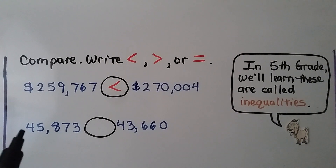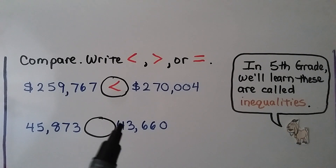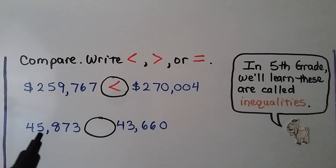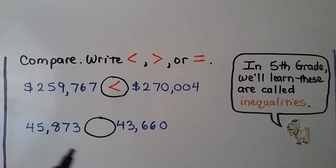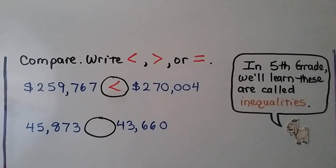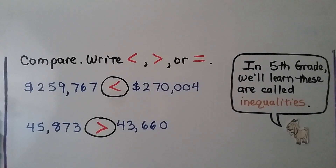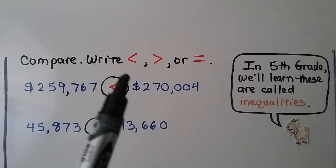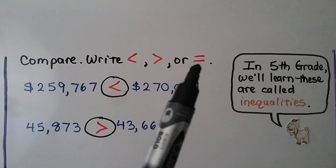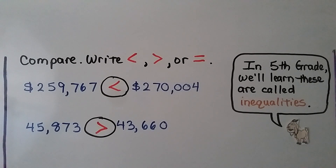Now let's look at this one. They both have a 4 in the ten thousands place, so we go to the next place value. This has a 5 in the thousands place; this has a 3. Because 5 is greater than 3, 45,873 is greater than 43,660. When you get into 5th grade, you'll learn that these are called inequalities — numbers written with a less than, greater than, or equal to sign.